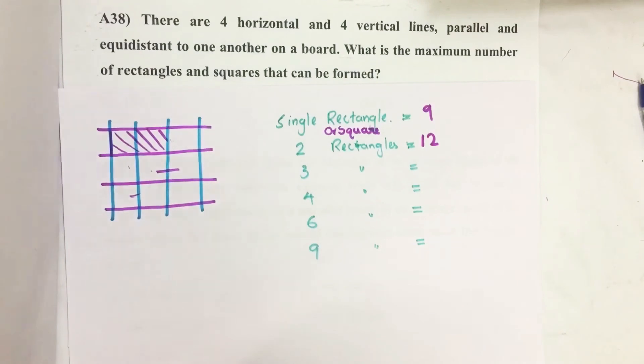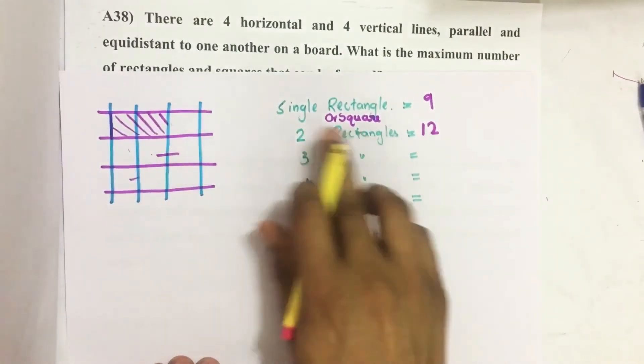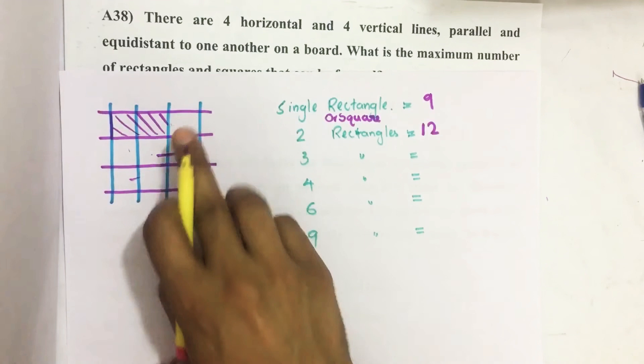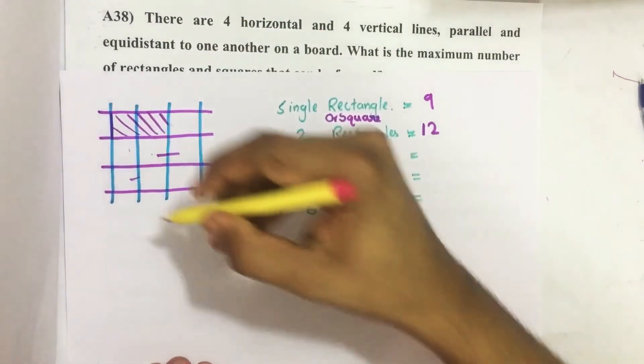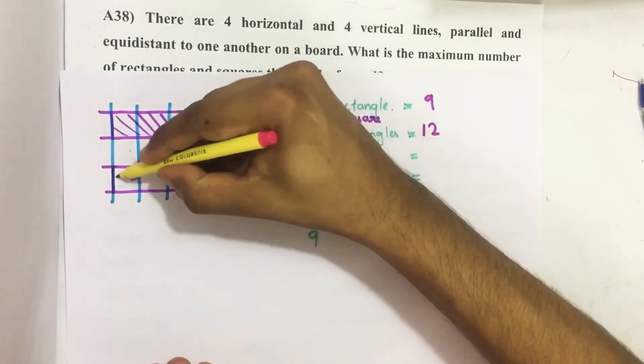Then by joining three small squares, how many rectangles are there? You can figure it out—this is a rectangle.